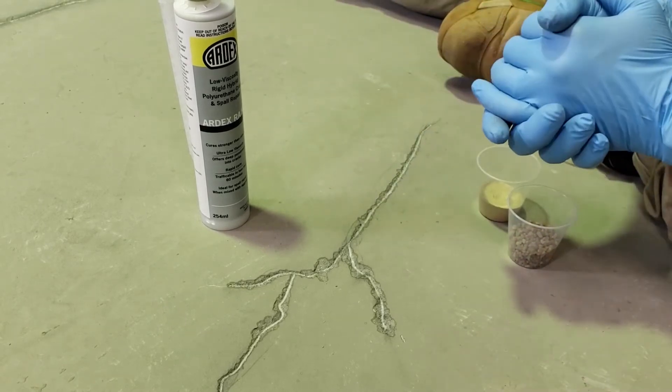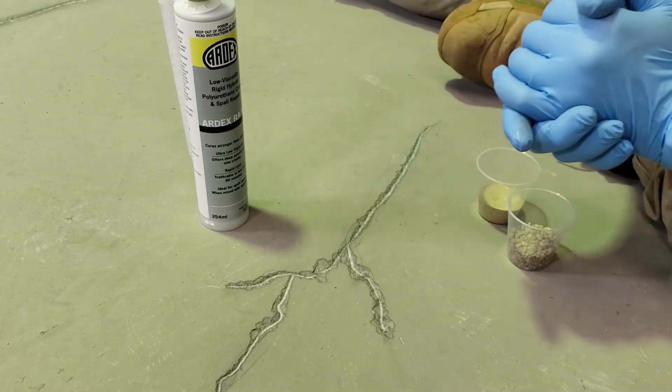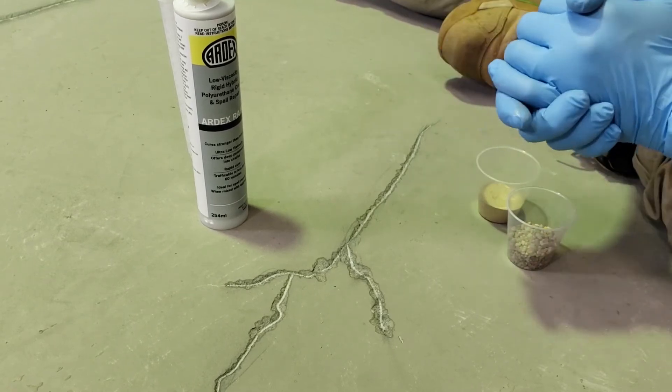If we're dealing with shrinkage cracking on a slab on ground, you can use this. Keep in mind, you may use more than what you think, because it is flowable. It is like water, so it will just want to travel, as you'll see in a minute.